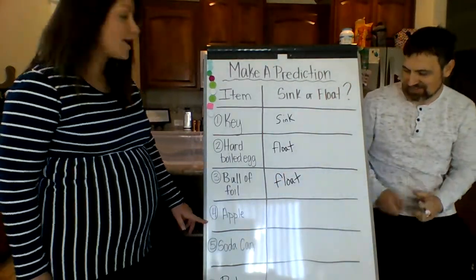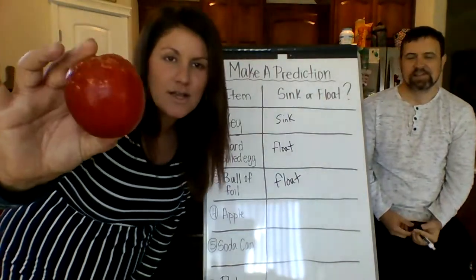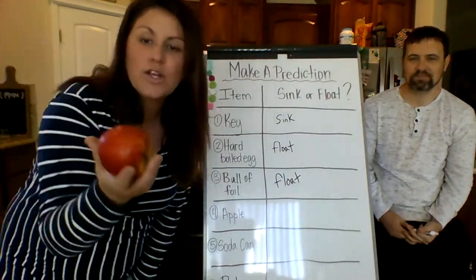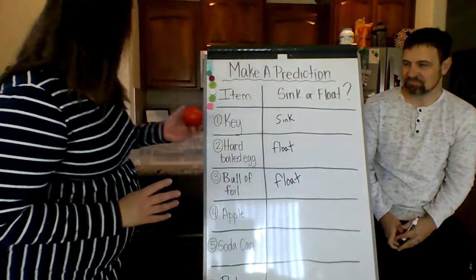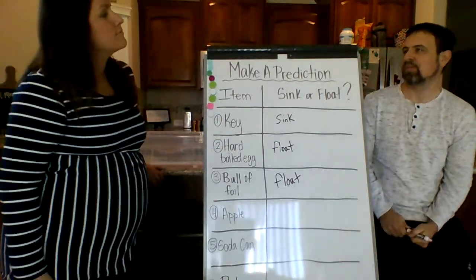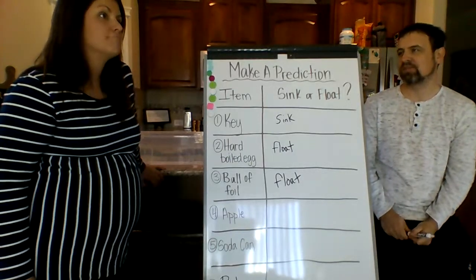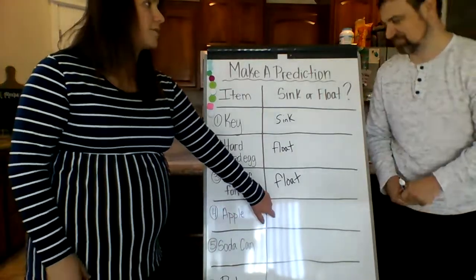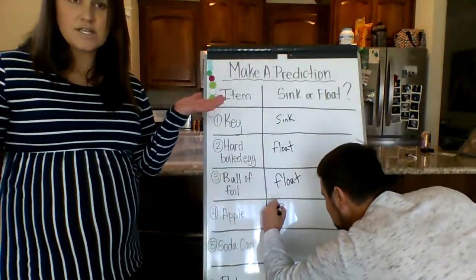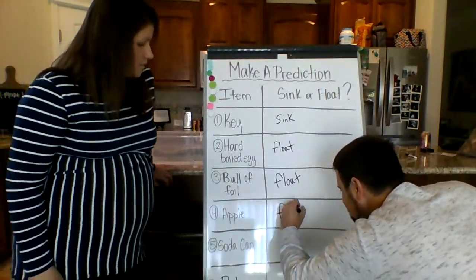Next we have an apple — not terribly big, not one of the Costco kinds. What do you think is going to happen to the apple? Sink or float? I was thinking when you bob for apples, they aren't going to be at the bottom, so I think they might float. I like how you related it to a real-life situation — when you've seen it out in the world.